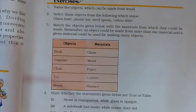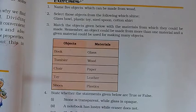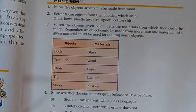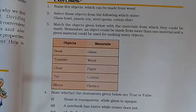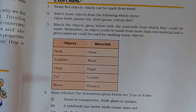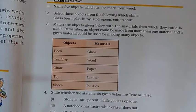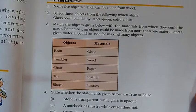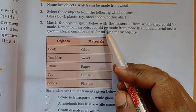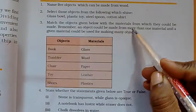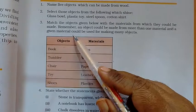Hello friends. I am again with the chapter that is sorting materials into groups. Here solving question number 3. The question is: match the objects given below with the materials from which they could be made.